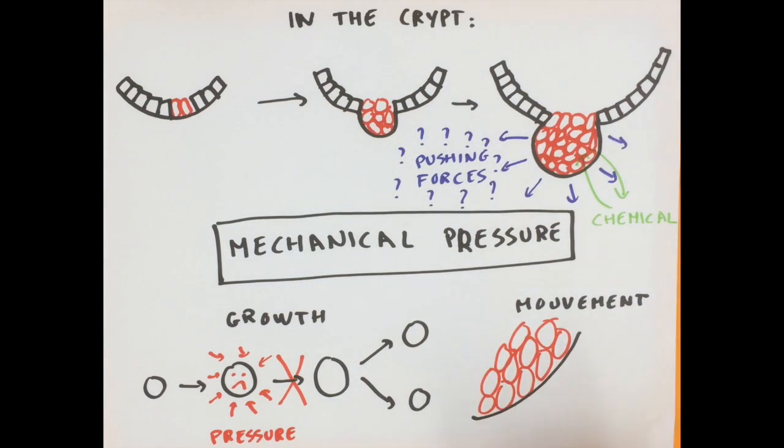Mechanical pressure could also cause cells to move out of a tumor and invade distant organs. This invasion of surrounding tissues by tumor cells is called metastasis and is one of the most dangerous aspects of cancer.